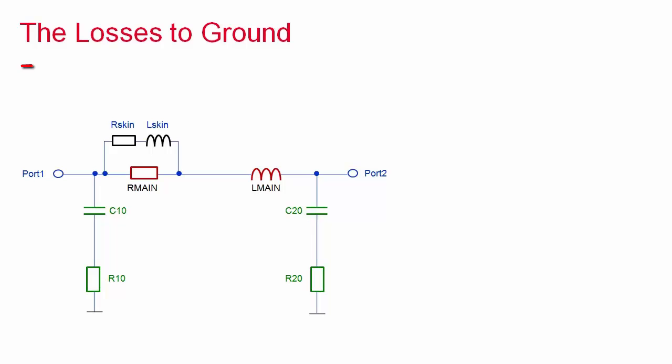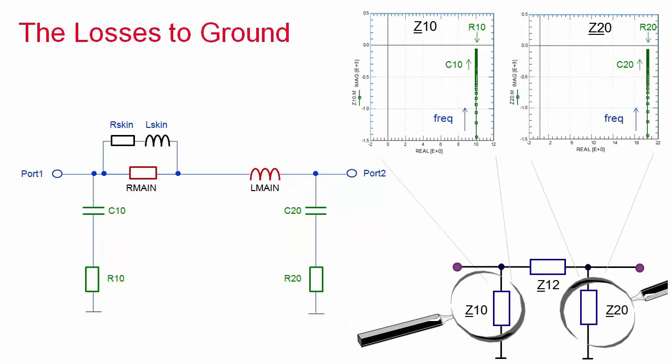The next step is the modeling of the losses to ground at each port. From the previous data inspection, we already know the lossy capacitor behavior modeled by a capacitor in series with a resistor. The impedance trajectories of both branches are shown here. In reality, and pretty typical for on-wafer devices, the losses represented by the resistors are frequency dependent.